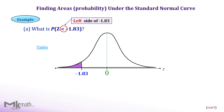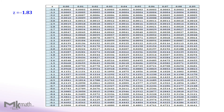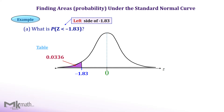Let's look up the z-table using minus 1.83. We need to find the left cumulative area to z equal minus 1.83. First, locate the first two digits of the z-score as minus 1.8, and then locate the second decimal place of 3 from the top row. The intersection of those values is the left cumulative area to z equal minus 1.83, which is 0.0336. So the area to the left of z equal minus 1.83 is 0.0336.